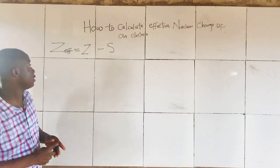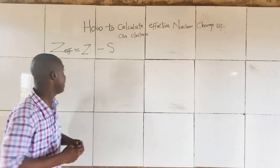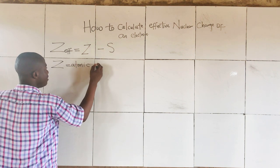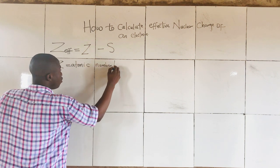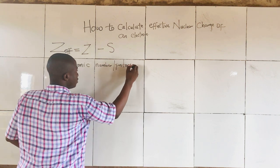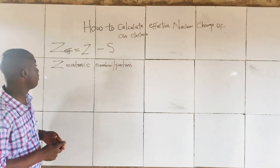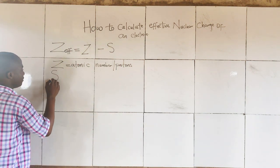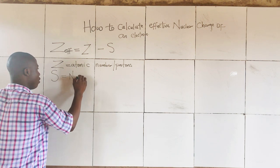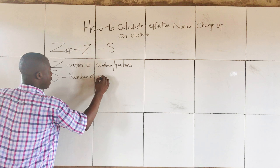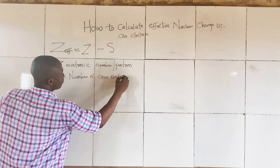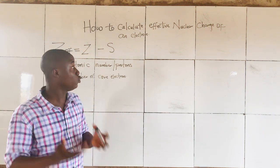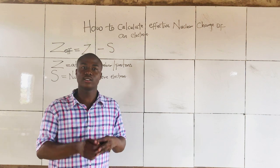Now the question we answer is: what is Z and what is S? Z simply means the atomic number, or the number of protons. And S simply means the number of core electrons. This is the formula we use to solve the effective nuclear charge of an electron.